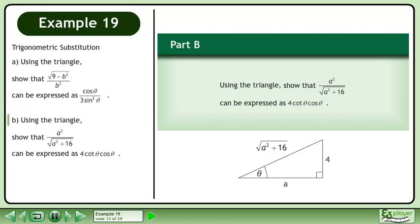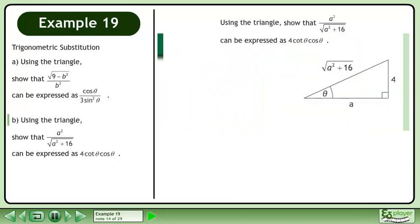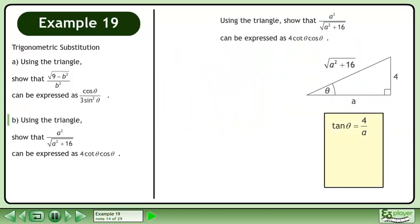Now we'll move on to part b. Using the triangle, show that a² over √ can be expressed as 4 cosθ. tanθ equals 4 over a. Cross multiply.